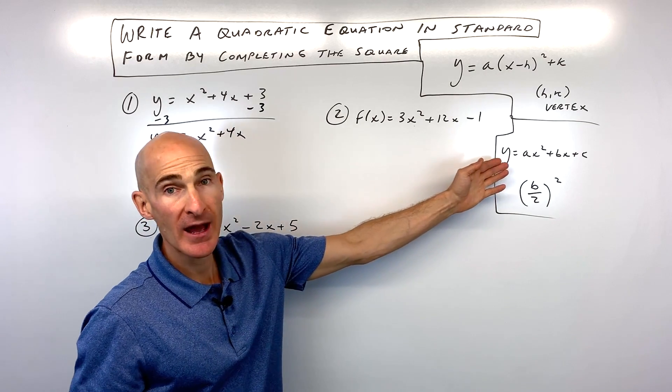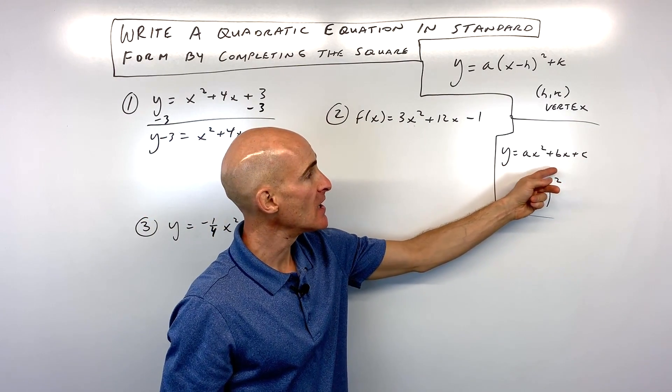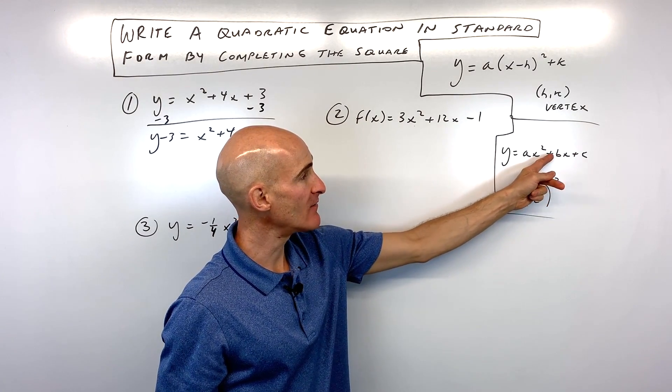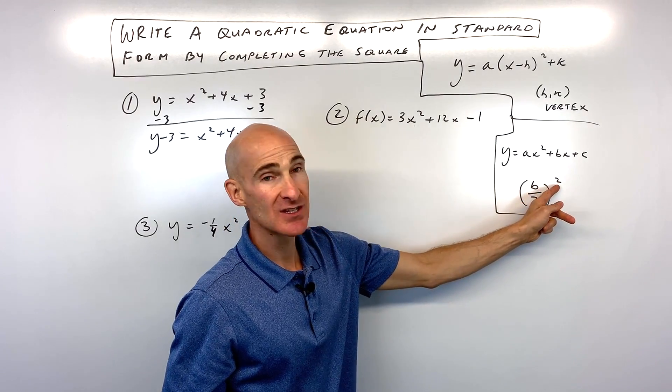Now, when you look at a quadratic, notice it's in this form here, ax squared plus bx plus c. You want to take that number that comes in front of or to the left of the x, that's the b value. You want to divide it by 2 and then take that quantity squared.